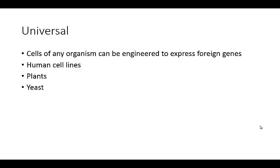This whole process is pretty universal — we can take cells from any organism and engineer them to express foreign genes. You can use human cell lines to express any gene of interest, or take plants and engineer them to express foreign genes. In fact, many of the plants available today are genetically modified — something like 95 to 98% of corn and soybean in this country are genetically modified, and cotton and potato are also very predominantly genetically modified. Yeast is also used to express foreign genes, and as a model eukaryotic system, it allows us to study many eukaryotic genes almost as easily as in bacterial cells.